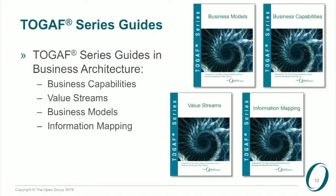What makes this really useful is that as well as those changes having gone in, there's a number of series guides. These series guides stand alone; they supplement the standard, and you can look at them and understand what they're about. They help explain things in a modular, digestible manner. The four that exist are: business capabilities, value streams, business models, and information mapping.